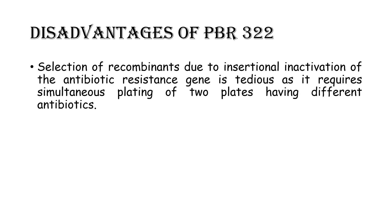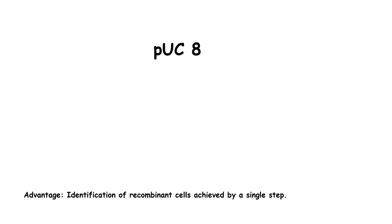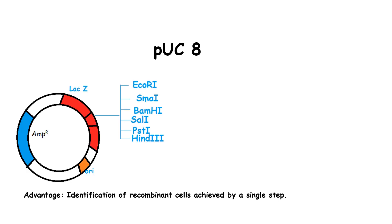Disadvantages of PBR 322: selection of recombinants due to insertional inactivation of the antibiotic resistance gene is tedious, as it requires simultaneous plating on two plates having different antibiotics. To overcome the problems associated with PBR 322, we can use PUC8. In PUC8, identification of recombinant cells is achieved in a single step. PUC8 plasmid contains an ampicillin resistance gene and a lacZ gene as a selectable marker. In the lacZ gene, there is the presence of multiple cloning sites.